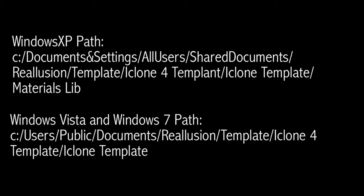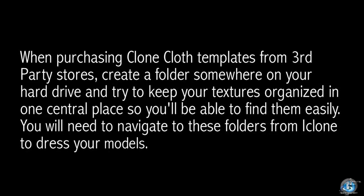When you purchase CCD clothing packs directly from Real Illusion, Real Illusion installs these materials into your default templates directory, located in the following path on Windows XP. I'll also show the path for Vista and Windows 7. When you purchase from a third-party store, these templates are generally contained in a zip file which you can save anywhere on your hard drive. I personally create a folder specifically for these textures which I simply call G3 Clone Cloth, and I suggest you have a central place to keep any purchased clothing materials.